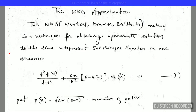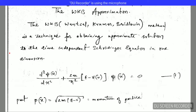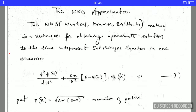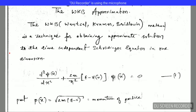Hello friends, I am Satyintra and today in this video lecture I will explain one of the most important approximations, which is the WKB approximation. This approximation is widely used in CSIR NET physics questions to find out the energy eigenvalues or to find out the wave function. Today we will discuss this method in detail, and as a beginning I will first prove this theorem and explain what this method is.